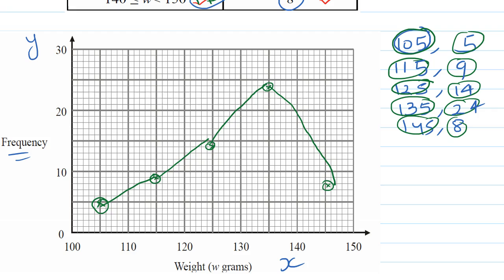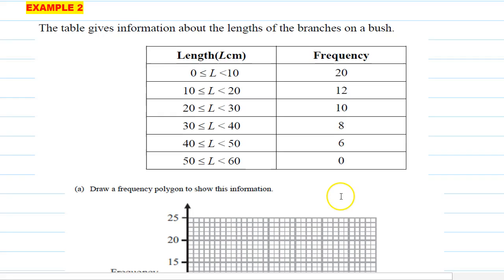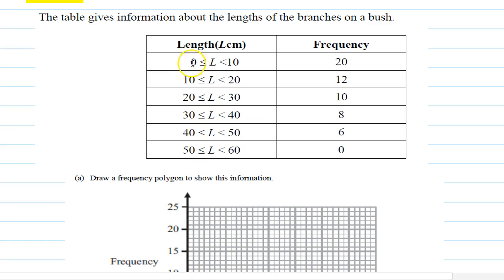Let's see another example. The table gives information about the length of branches on a bush. Length is given as 0 to 10, 10 to 20, 20 to 30, 30 to 40, 40 to 50, and 50 to 60, with their frequencies. First, calculate the midpoints: 0 plus 10 divided by 2 is 5; then 15, 25, 35, 45, and 55.